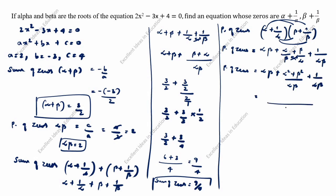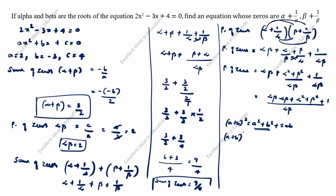Taking alpha×beta as common in the denominator: [alpha×beta × alpha×beta + alpha² + beta² + 1] / (alpha×beta). We need alpha² + beta², which we don't know directly. Using the identity (A + B)² = A² + B² + 2AB, we rearrange to get A² + B² = (A + B)² - 2AB.